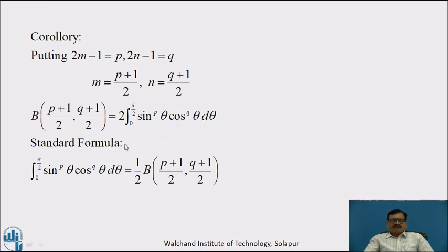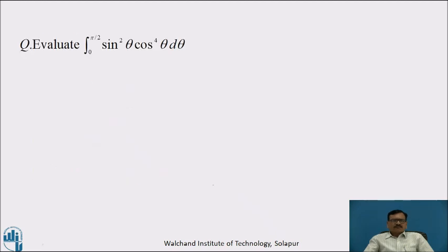Therefore, we can apply the standard formula: when evaluating the definite integral of a trigonometric function, integration from 0 to π/2 of sin raised to p θ · cos raised to q θ dθ is equal to (1/2) · Beta((p+1)/2, (q+1)/2). Pause the video and evaluate the integral from 0 to π/2 of sin²θ · cos⁴θ dθ.